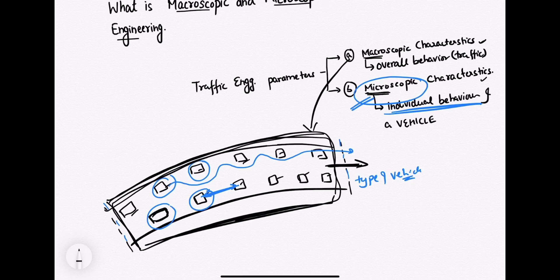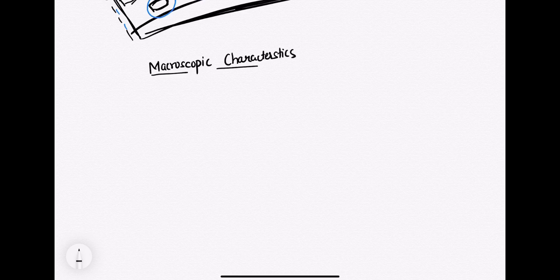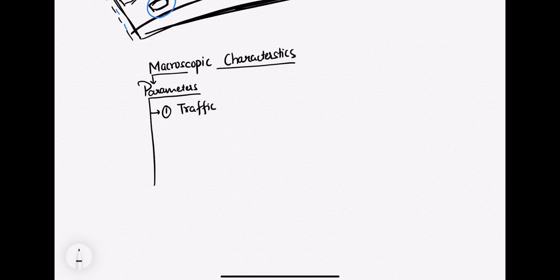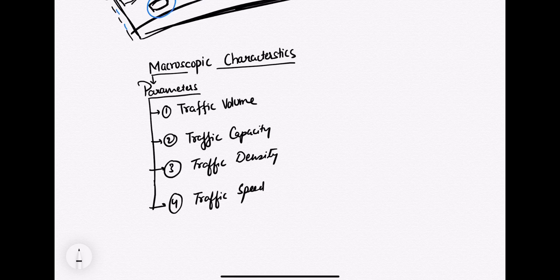Now, what are the parameters included in macroscopic characteristics? The parameters included are: first, traffic volume; second, traffic capacity; third, traffic density; and fourth, traffic speed. So these are the four parameters included in your macroscopic characteristics.